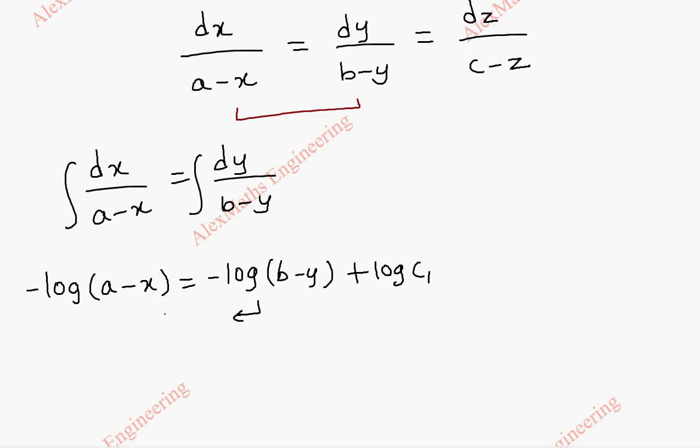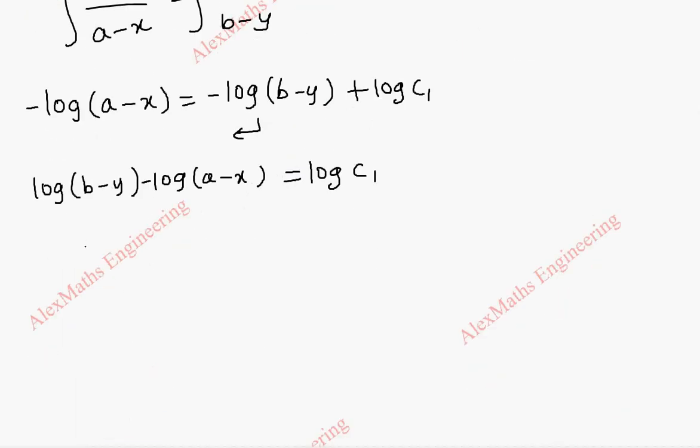Now, let's take this to the other side. So this becomes log of B minus Y minus log of A minus X equal to log of C1. Using log rule, this is log B minus Y by A minus X equal to log C1.